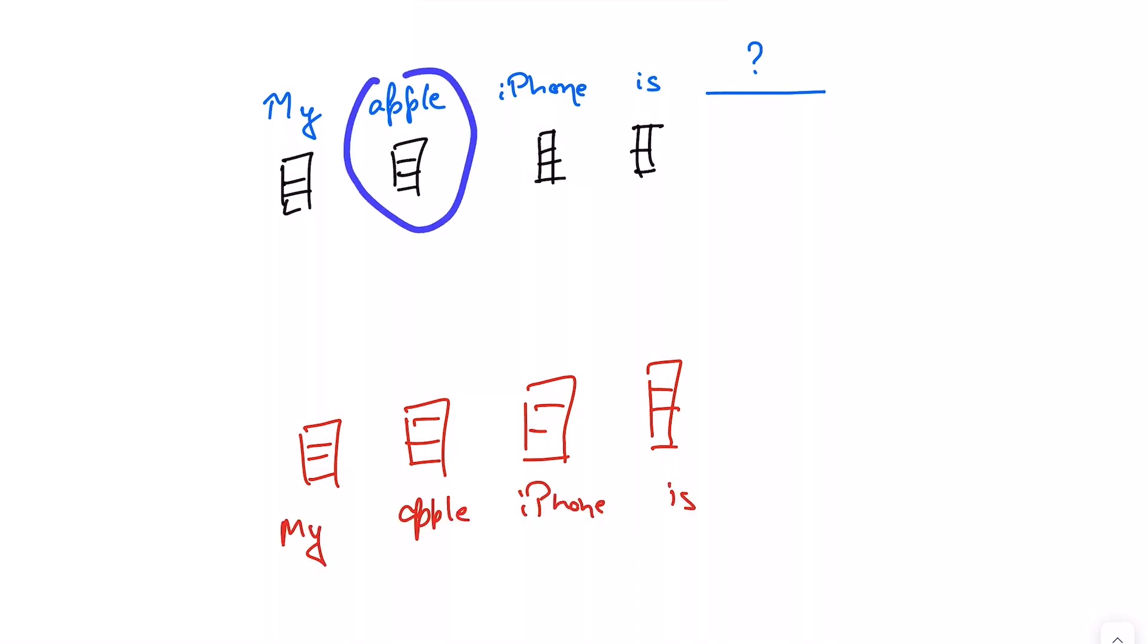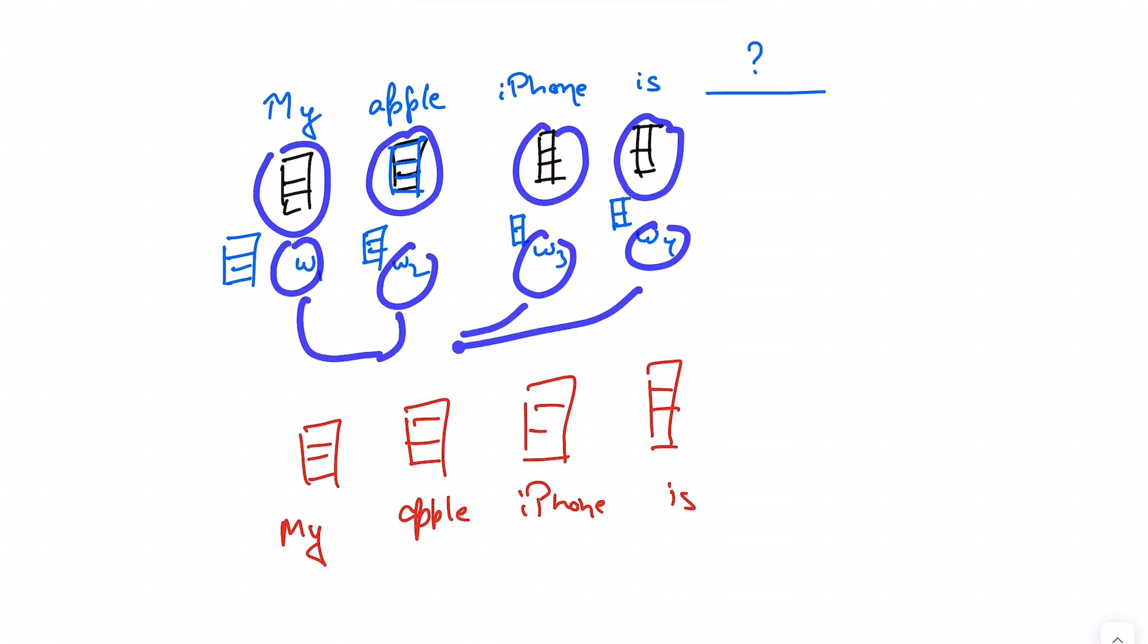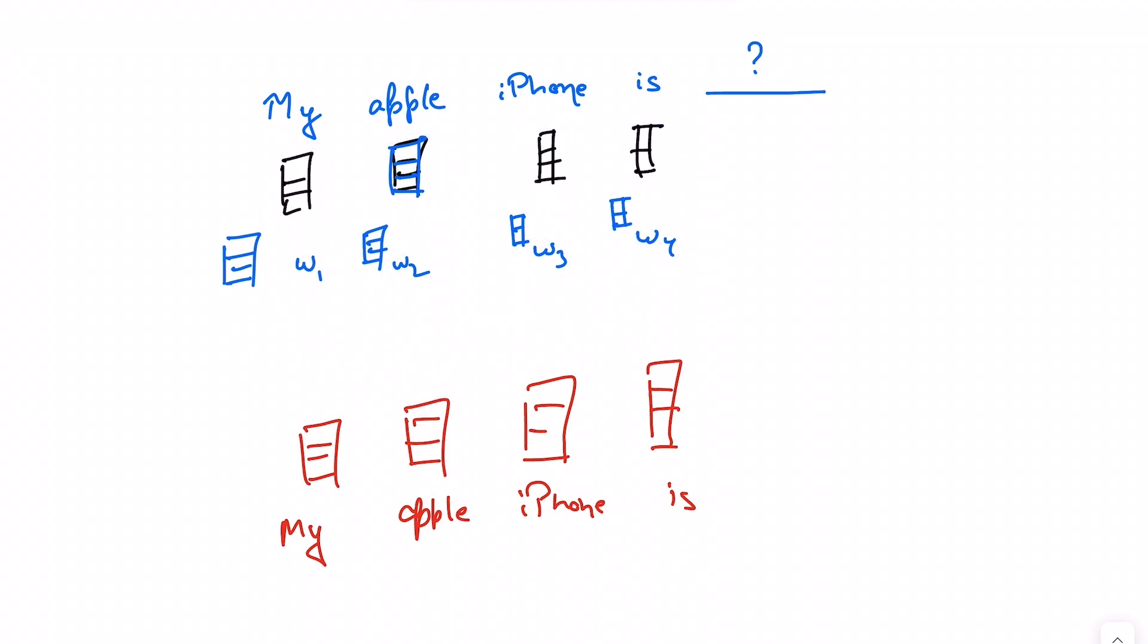So the representation of apple gets updated such that the new representation is closer to the meaning of the company and not to the fruit. So the way we do this is we take the representation of apple and do a dot product with the representations of words around it. The dot product of these gives us new weights and then we weight these matrices by the weight that we got and sum them all together, come up with the updated representation of apple.